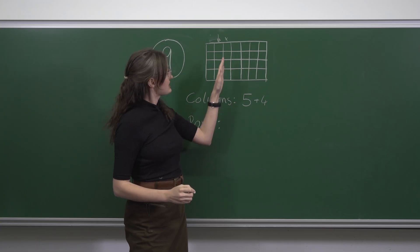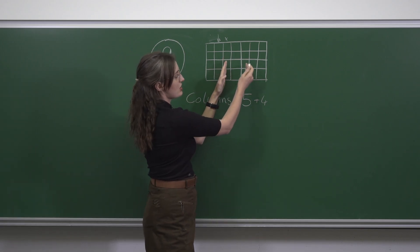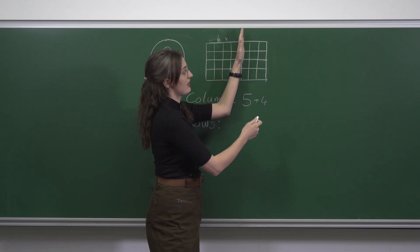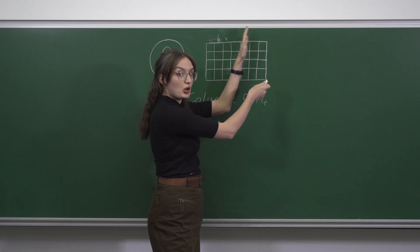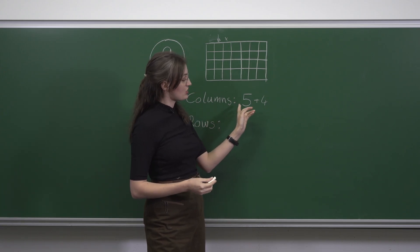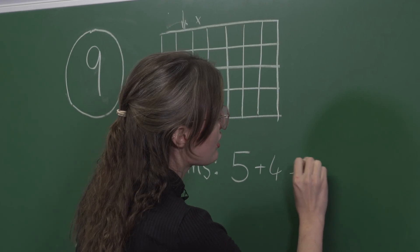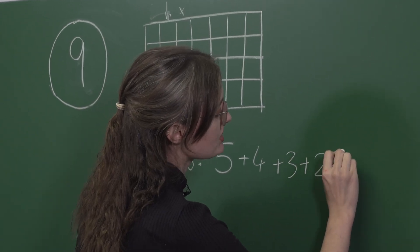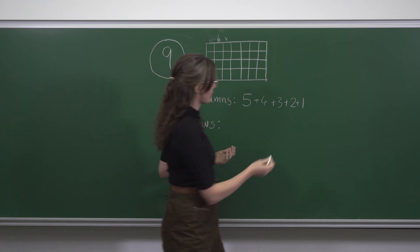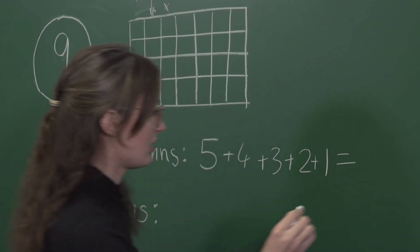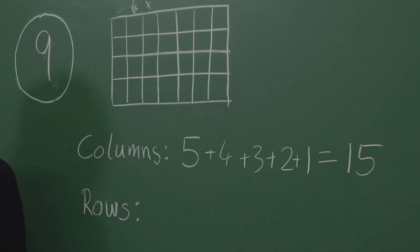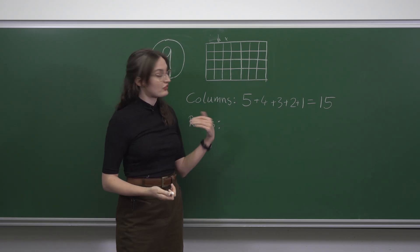Continuing on like this, if the leftmost column is here there are only three options; if it's here there are only two options; if it's here there's only one option; and there are no options if the left hand column is in the final two positions. So the total is five plus four plus three plus two plus one, giving fifteen ways of picking two columns which don't touch each other.